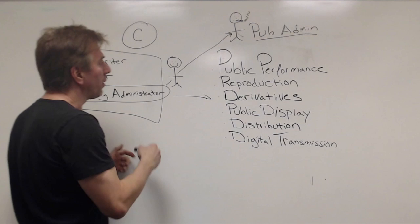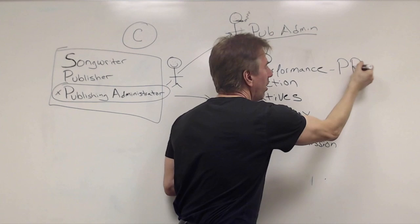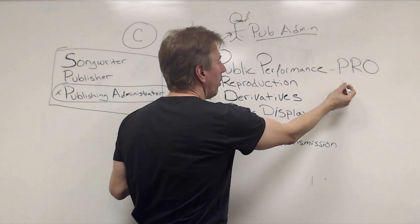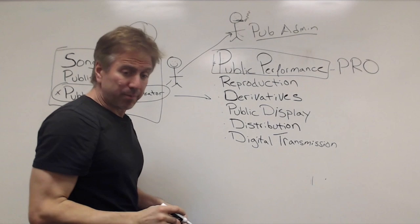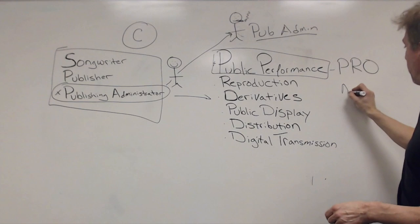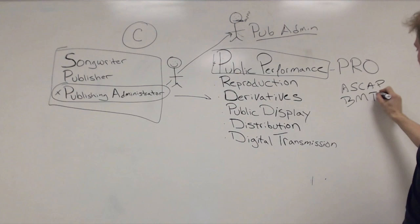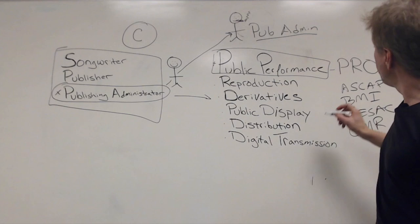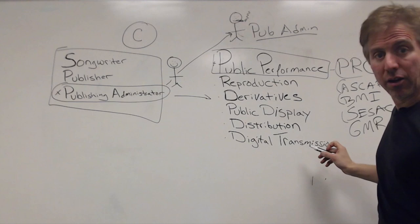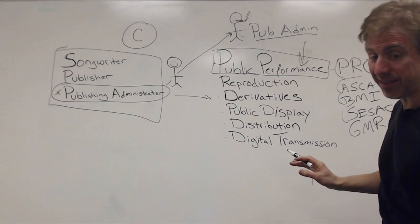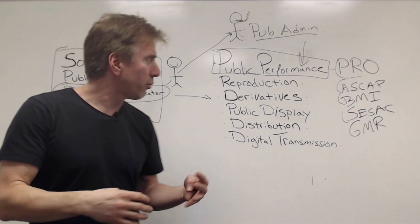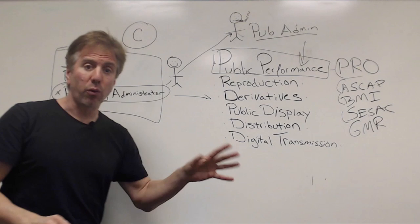So you outsource it. And what you do is you become a member of a performing rights organization, also called a PRO, performing rights organization. And what you're really doing is you're outsourcing to that PRO this one task. So in the United States, we have a number of PROs. We have ASCAP. We have BMI. We have SESAC. We have GMR. These are examples of PROs. And what you're doing when you become a member of these organizations, you are hiring them to license and collect the money for this one thing. That is it. They don't do any of this other stuff. That's up to you still.